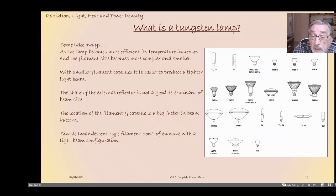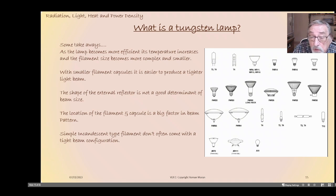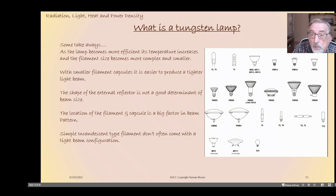You cannot determine beam type simply by looking at the lamp diameter. People say a PAR 38 gives this kind of beam and a PAR 20 gives another — but you can't really tell. What you can say is that if it's a large incandescent filament, which is sometimes visible, you can't focus it as tightly, so you may get rings or shadows. You're more likely to get that with a large filament than with a small capsule.